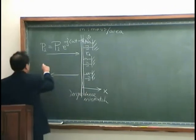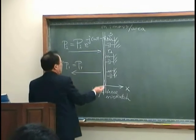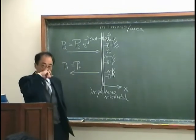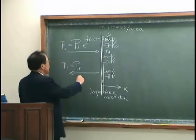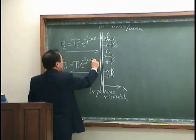And then the reflected wave, I denote that is Pr. Again, that is the complex amplitude, and then exponential minus j omega t plus kx.